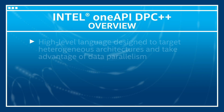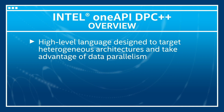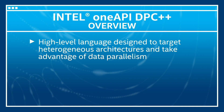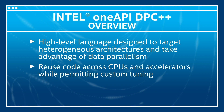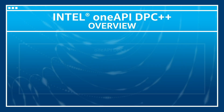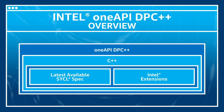Data Parallel C++ is a high-level language designed to target heterogeneous architectures and take advantage of data parallelism. It enables you to reuse code across CPUs and accelerators while permitting custom tuning. DPC++ is based on familiar standard C++ language constructs such as templates and lambda functions.